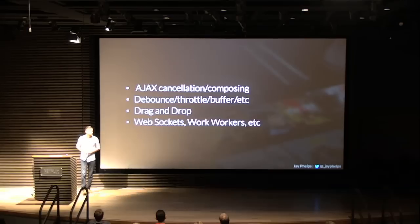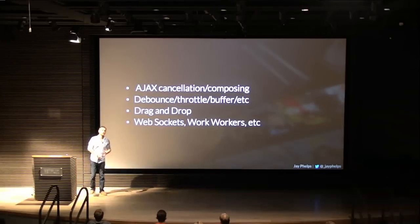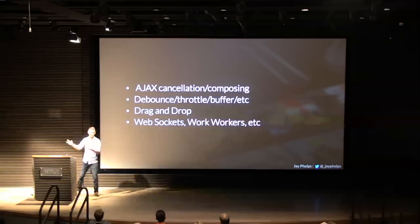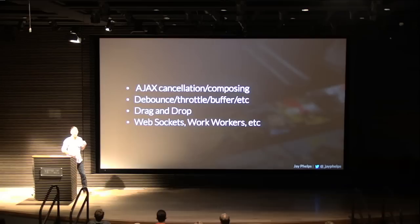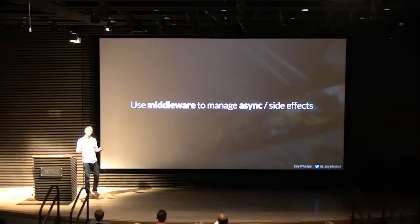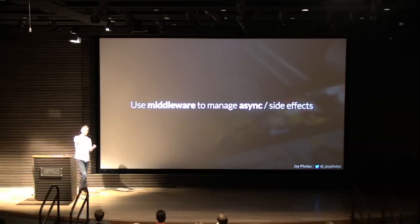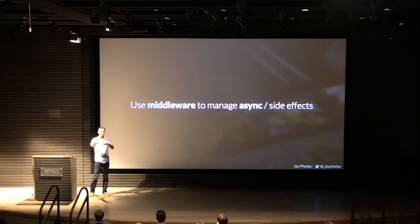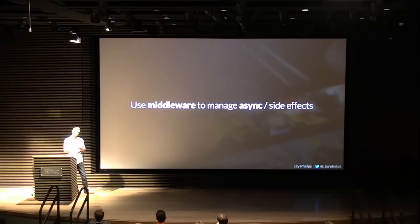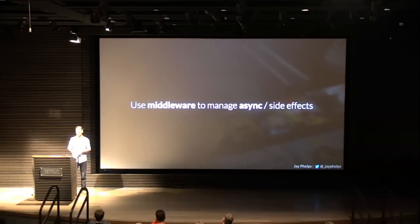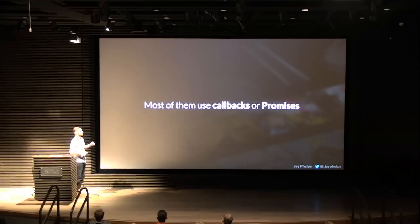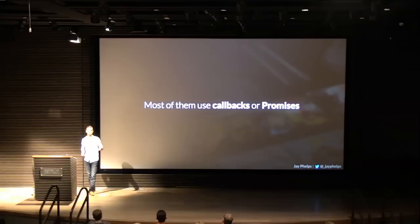Some things you need more control on: Ajax cancellation or composition — for example, making one Ajax request and then needing to make another using the response of the first one. Doing debouncing, buffering, basically manipulating time. Drag and drop and web sockets. In the Redux world most commonly, people use middleware for this. A piece of middleware basically sits between your application and the Redux store, so any of the actions you dispatch will go through the middleware either before or after they reach the reducer. A lot of existing middleware use callbacks and promises to give you the ability to do more complex async stuff.